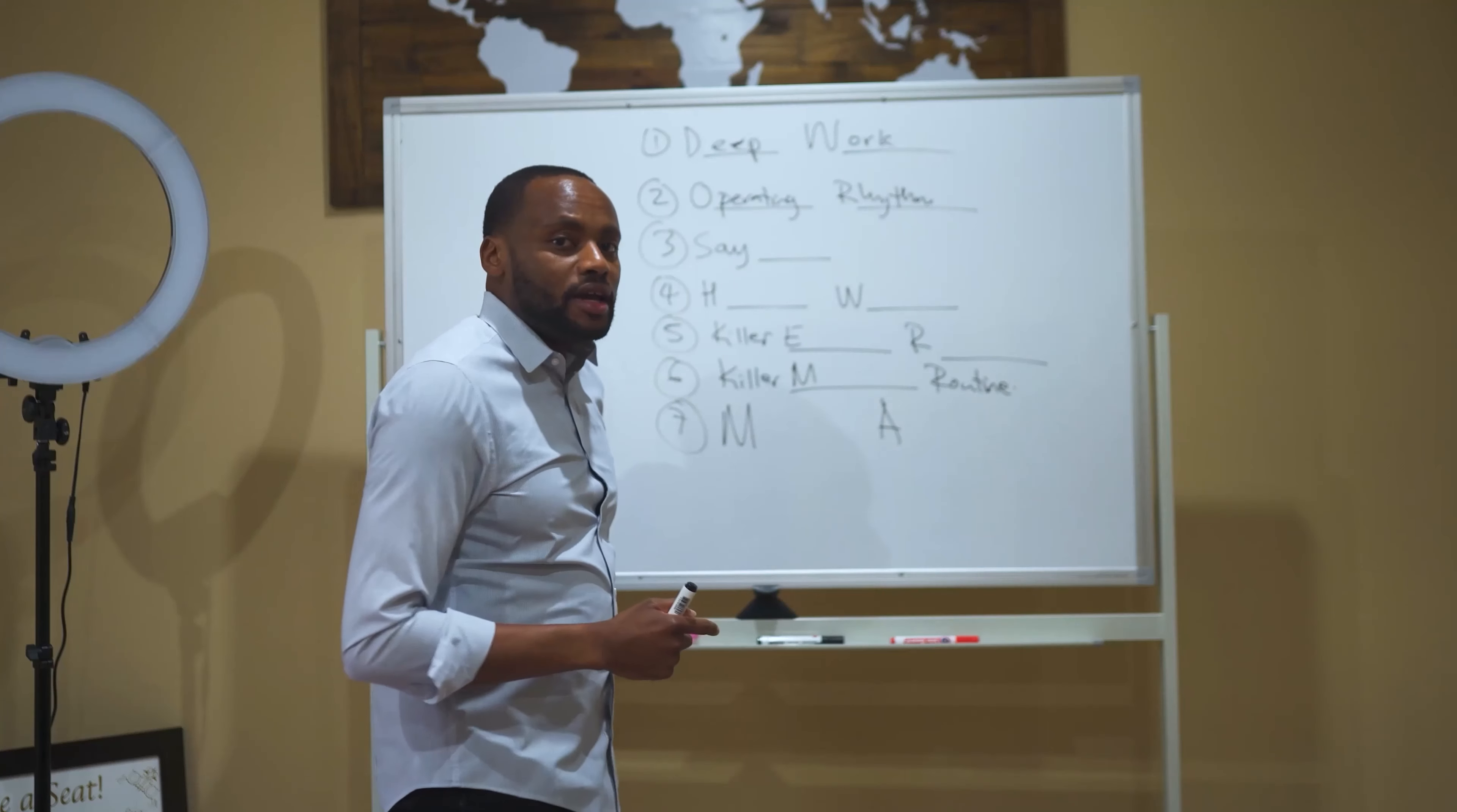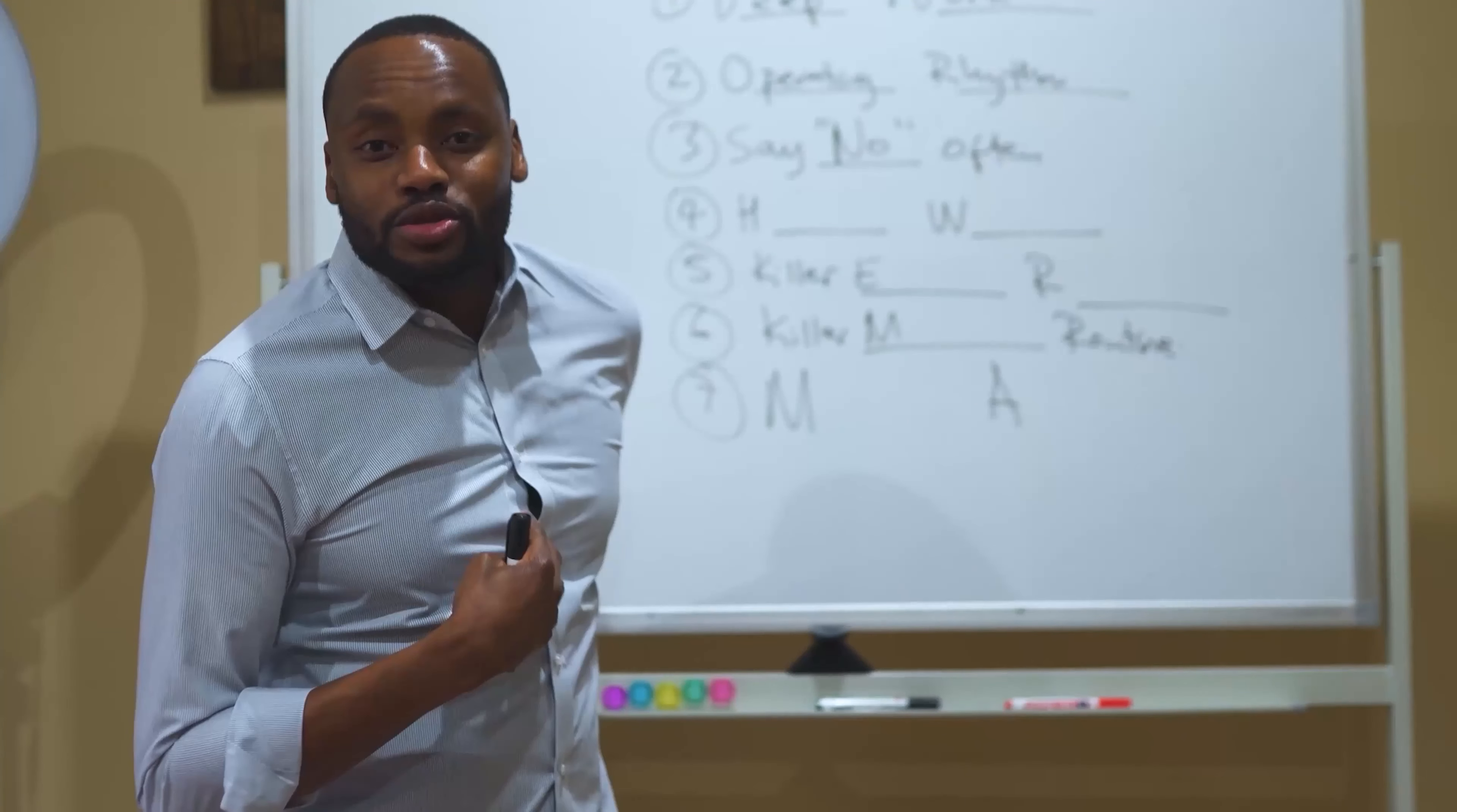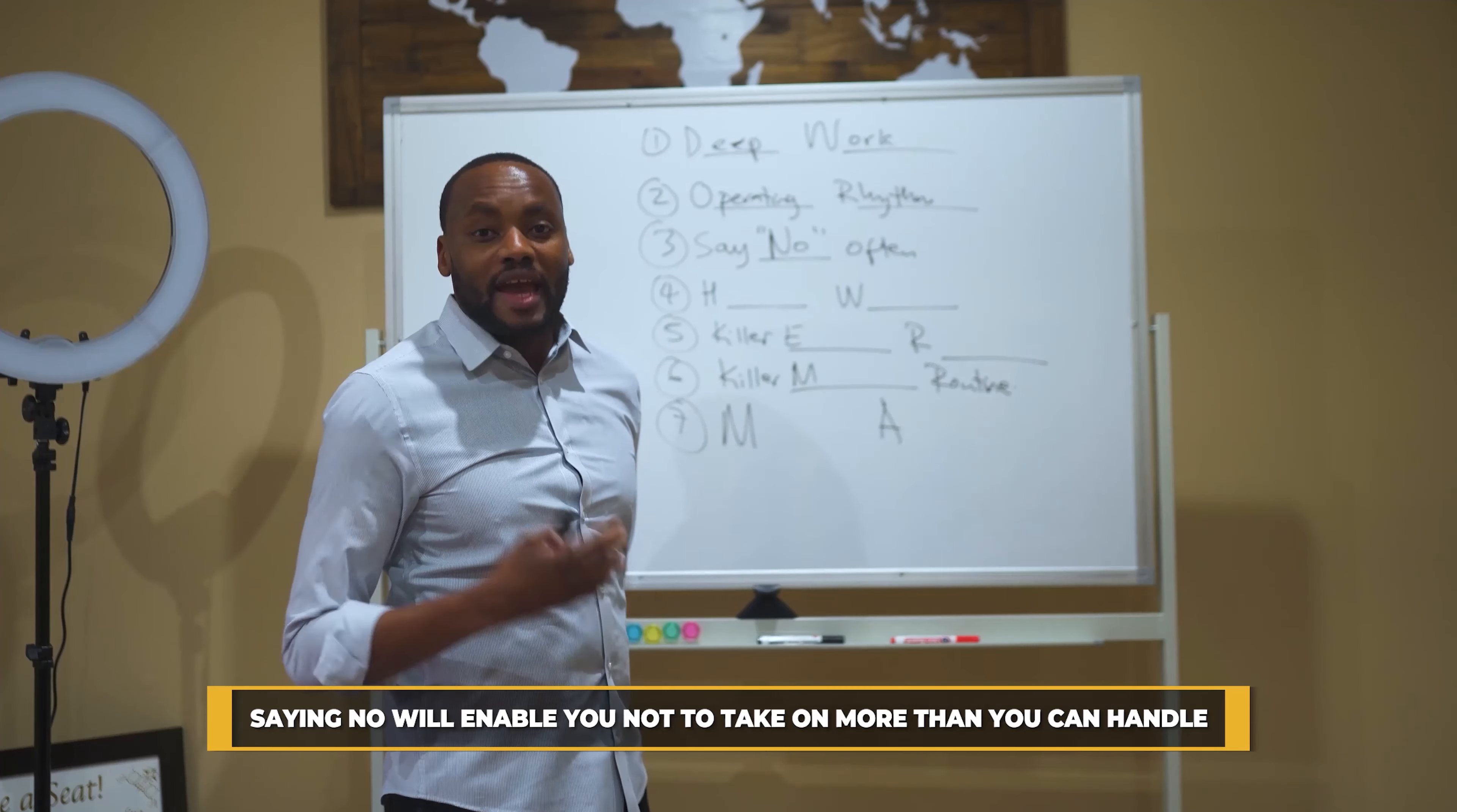And then the third one is you need to learn to say no often. You see, as entrepreneurs, we get stuck into this thing where we're always saying yes to new projects, yes to new opportunities. I used to suffer from SOS, which is shiniest object syndrome. So by learning to say no more often will enable you to stay focused and it will enable you not to take on more than you can handle.